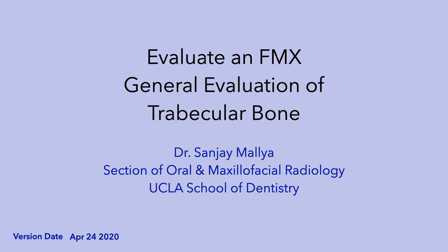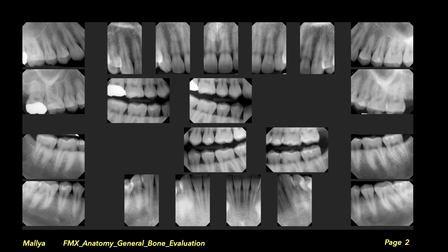This module will provide an introduction to the basic principles of evaluating trabecular bone on intraoral radiographs. In addition to evaluating the teeth and periodontal structures on intraoral images, we also evaluate the trabecular bone. We assess the quality of trabecular bone in terms of its radio density, and the quantity of trabecular bone in terms of the number of bony trabeculae that can be seen.